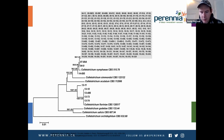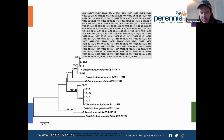Colletotrichum acutatum usually causes fruit rot. Colletotrichum fioriniae can cause crown rot, petiole and runner lesions, and black leaf spot. And Colletotrichum gloeosporioides can cause crown rot and irregular leaf spot.